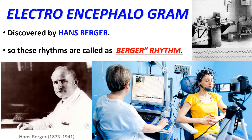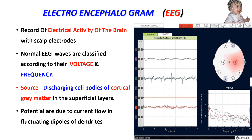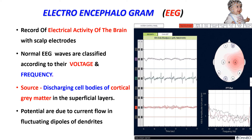Electroencephalogram was discovered by the German psychiatrist Hans Berger, so the rhythms produced by the electroencephalogram are also called Berger's rhythm. The EEG machine was used by Hans Berger to record the electrical activity of the brain taken from the surface of the scalp.